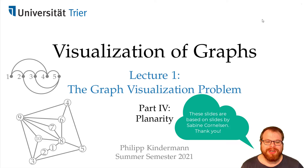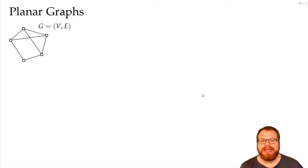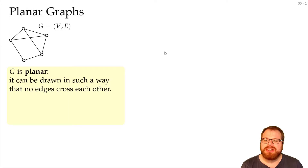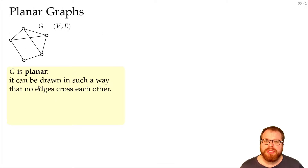In this part we want to talk about planarity, planar graphs, and how we can test whether a graph is planar. A graph is planar if we can draw it in such a way that no edges cross each other. This is for a node-link drawing where the vertices are points and the edges are curves.